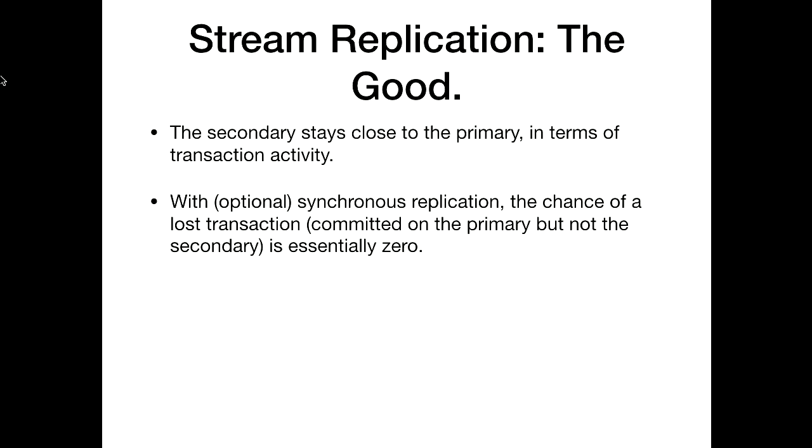You can turn on optional synchronous replication — on a server-by-server basis or even transaction-by-transaction — and this reduces to pretty much zero the chance of a lost transaction. Synchronous replication waits for an acknowledgement back from the secondary saying 'I have committed this to disk.' More recent versions of Postgres have all sorts of exotic things like quorum commit, where three out of five have committed it. It is, however, a performance hit because you have to wait for these acknowledgements. You can cascade replicas — the most I've ever seen is over 300.